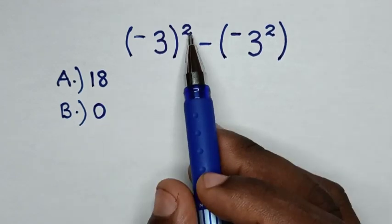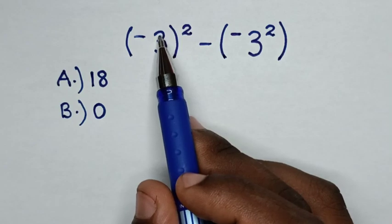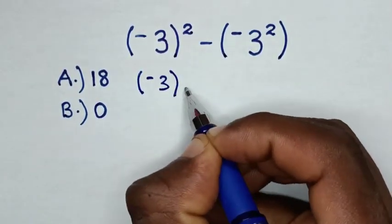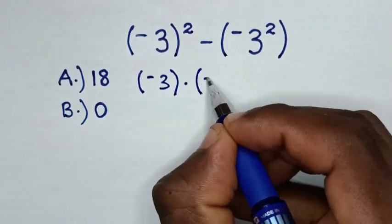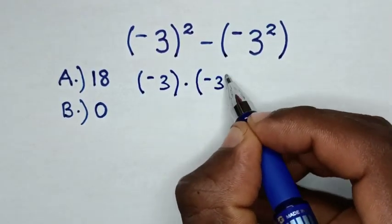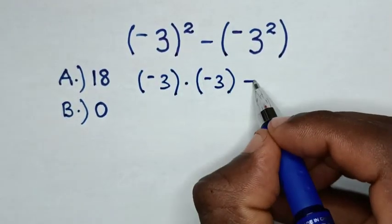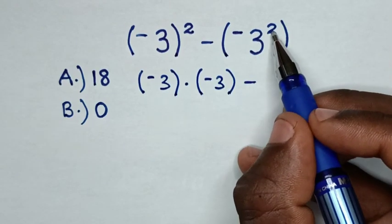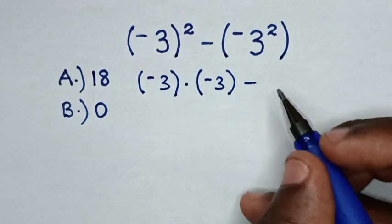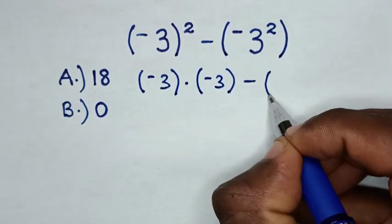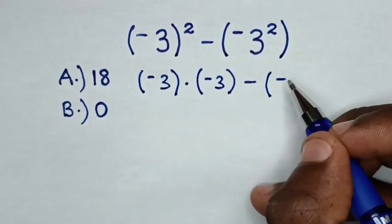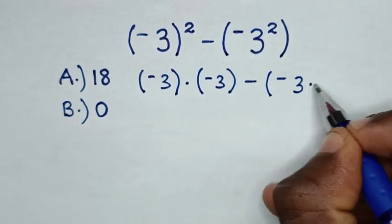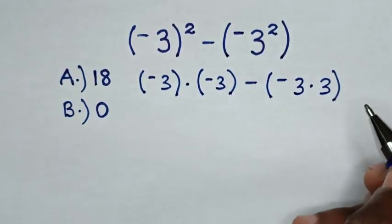So, the square of negative 3 inside the bracket is the same as bracket negative 3 times bracket negative 3. Then minus the square of 3, not the square of negative 3. So, it will be bracket negative, then 3 squared is the same as 3 times 3, bracket.